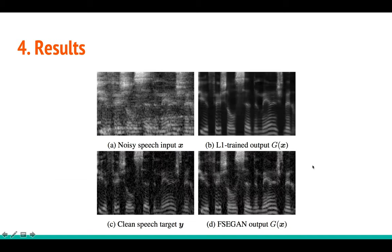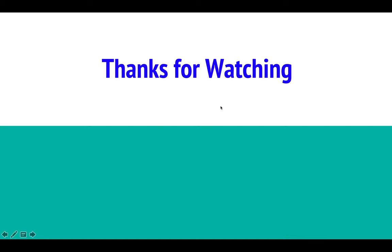Looking at the spectrogram visualizations: noisy data looks very cluttered, while an L1-only trained model (no GAN loss) produces a completely smooth spectrogram with a lot of missing information. The clean speech target looks structured and detailed, and FSE-GAN predicts something similar to it. The L1-only result is overly smooth because of the reconstruction loss, whereas FSE-GAN retains more detail.